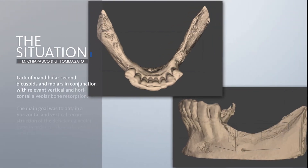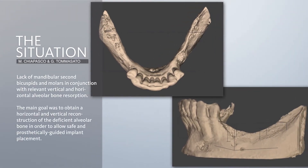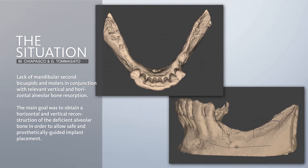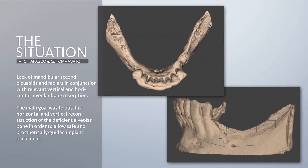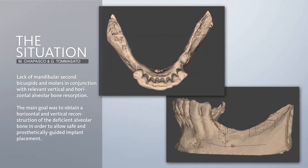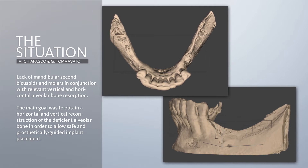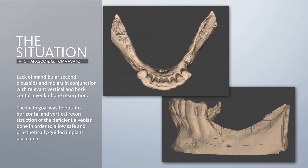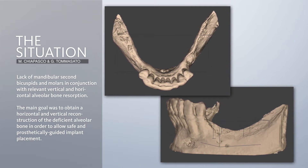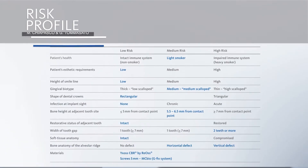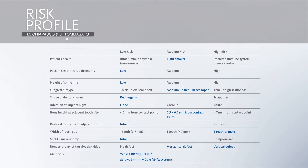From the CT scans you can see very well the vertical and horizontal resorption on both sides, left and right, with no chances to place implants without regenerating the bone in advance. General clinical conditions are good.